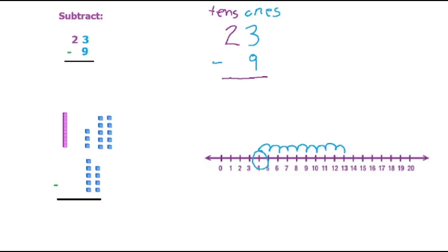So how's that going to look? It'll look like that. We'll have 4 here and then we have this tens block and we don't take anything away from it, so we bring it down here. So we have 14. So we know that 23 minus 9 equals 14.